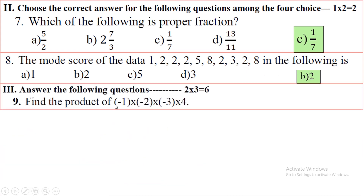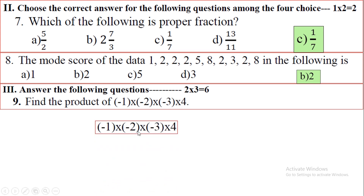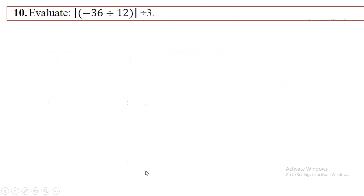Third main — find the product of minus 1 into minus 2 into minus 3 into minus 4. First, minus 1 into minus 2 gives plus 2. Then minus 3 into minus 4 gives plus 12. Finally, plus 2 into plus 12 gives 24 — but wait, checking signs: plus 2 into minus 12 gives minus 24. So minus 24 is the correct answer.